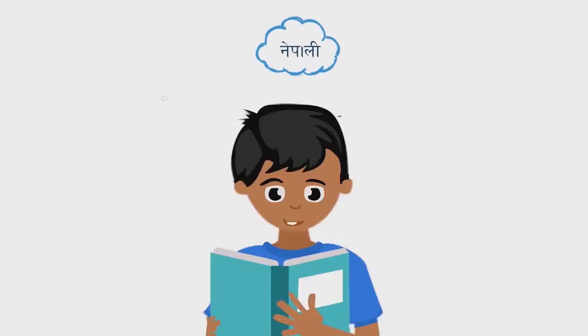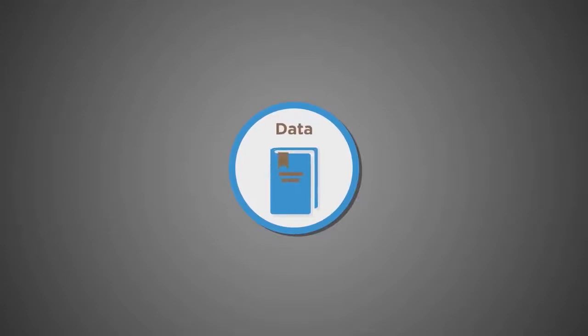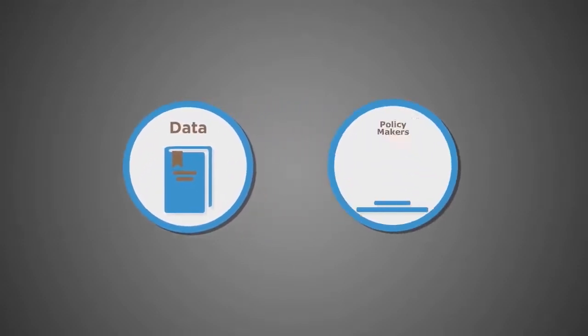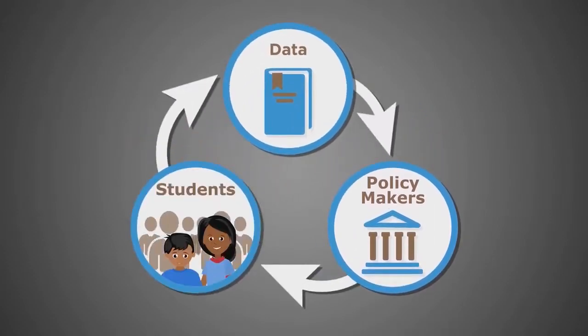Children were tested on Nepali and English reading and basic arithmetic at third-grade level. By generating credible data, the survey enables policymakers and education implementers to identify and assist more students like Radha and Sundar.